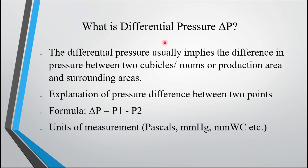What is differential pressure or delta P? Differential pressure implies the difference in pressure between two cubicles, two adjacent rooms, or between the production area and the surrounding area. The formula is: ΔP = P1 − P2. Units of measurement are Pascals, mm of mercury, or mm of water gauge.